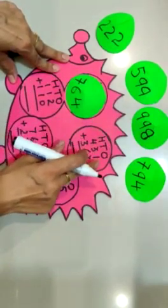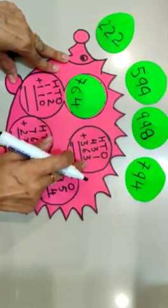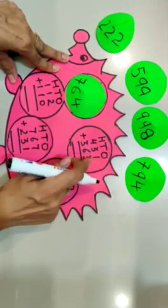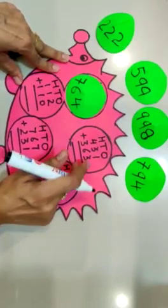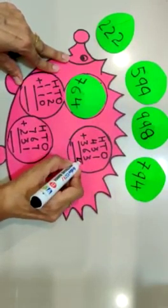Next is 431 plus 163. We always start with one's place. 1 in mind, 3 on finger, quickly tell the answer, yes, we get 4.